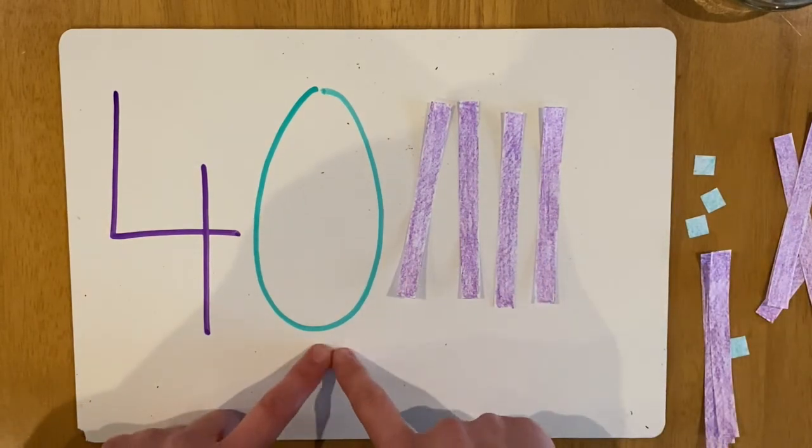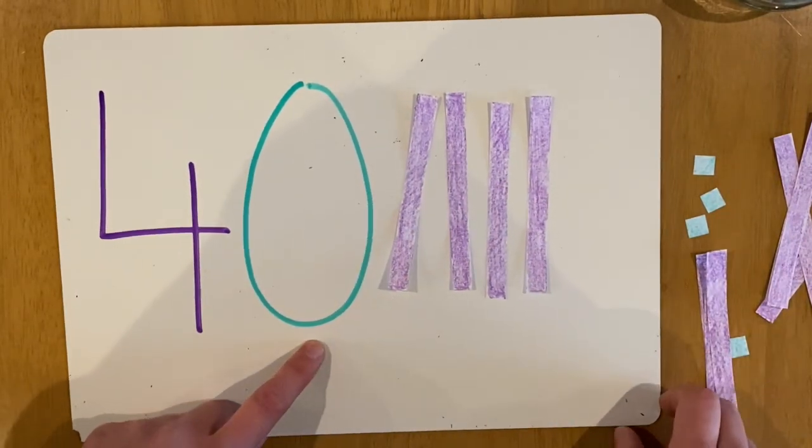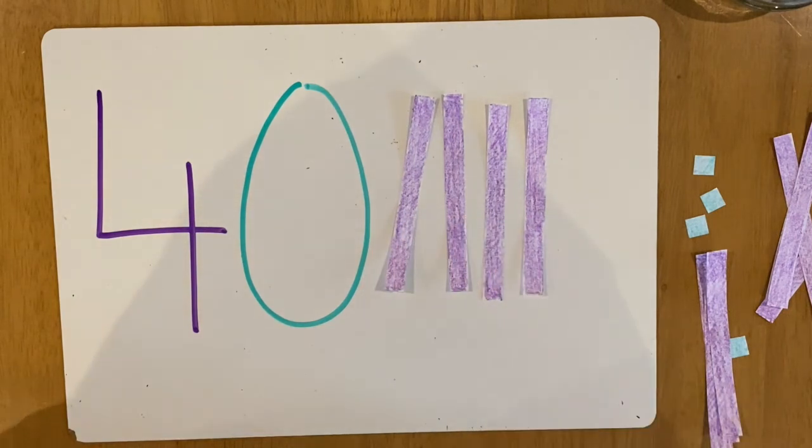Let's look at the ones column. Nope, there's a zero. So we don't need any ones deans. So this is how we make the number 40.